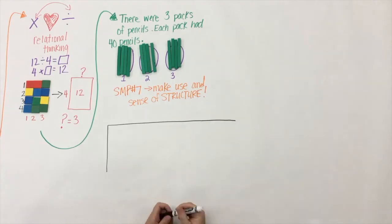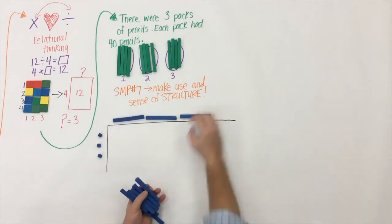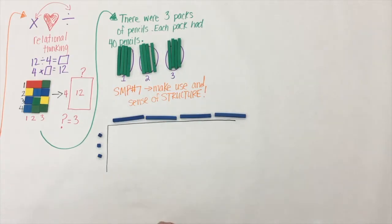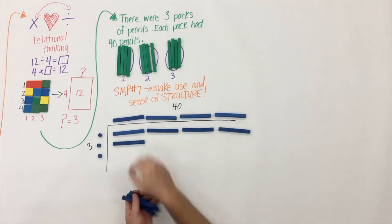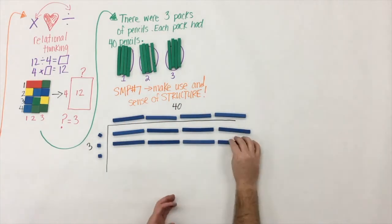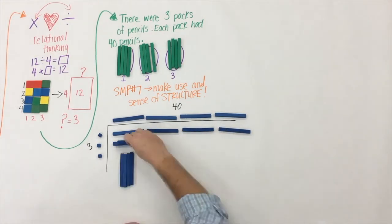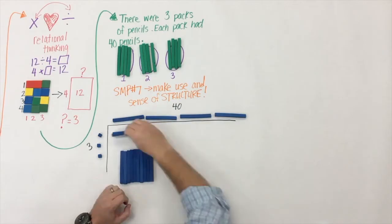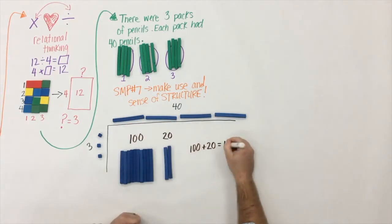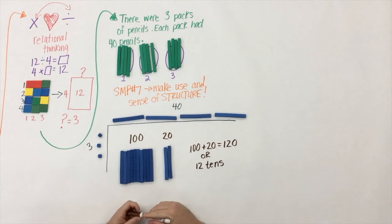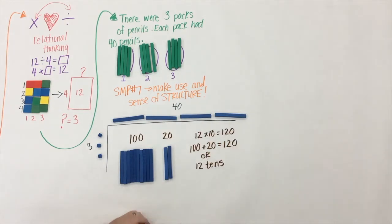One way to be efficient is to make use of structure, and when we do we make sense of it. Here we begin to create an area model for multiplication, very much like an array just on a bigger scale with larger numbers. So 3 times 40 — we take it, build it out of ten-rods. We have 10 tens, which is 100, plus 20 is 120, or it could also be seen as 12 tens.